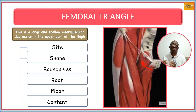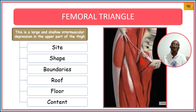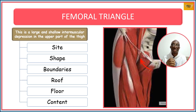So what is this femoral triangle? It's actually a depression at the front of the thigh — an intermuscular depression at the upper part of the thigh, upper one third of the thigh. In considering this triangle, we'll look at the side, we'll also look at the shape, we'll consider the boundaries, then we'll look at what forms a roof, what forms a floor, and then we'll look at the contents.